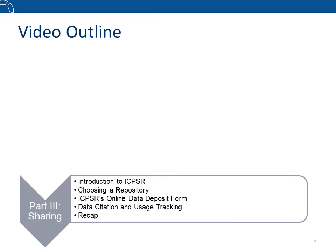Part three covers the actual data sharing process, including an overview of the Inter-University Consortium for Political and Social Research, or ICPSR, which is NIDILRR's preferred repository for data sharing, how to identify a repository that follows best practices, a walkthrough of ICPSR's data deposit process, and data citation or data usage features available through ICPSR.